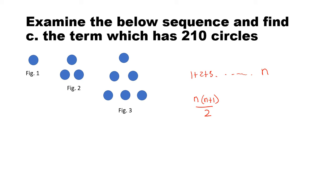And the total number of circles we always find by n times n plus 1 divided by 2. That gave us the total number of circles. And that is equal to 210 circles. So let's cross multiply. n times n plus 1 is equal to 420.